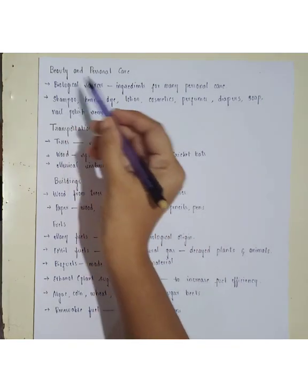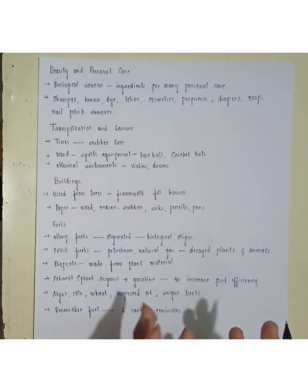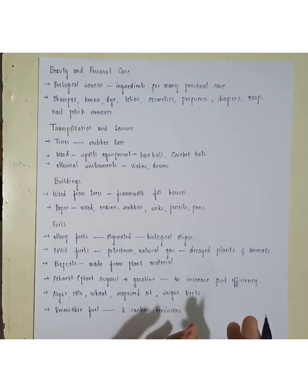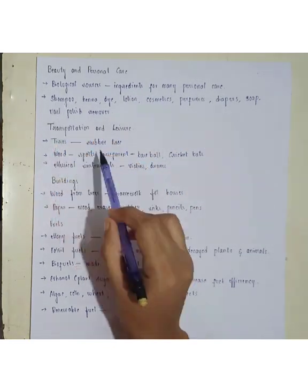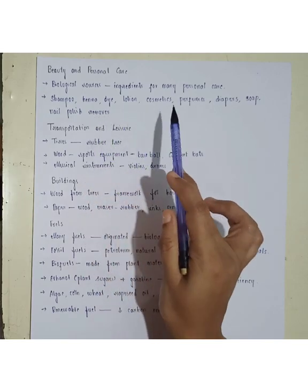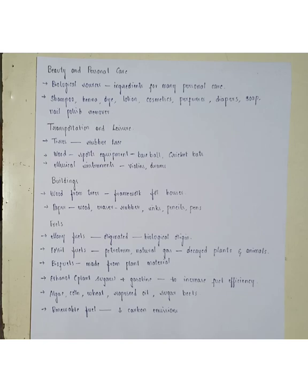Biology is also important in beauty and personal care. Biological sources — meaning living organisms — are used as ingredients for many personal care items. For example, shampoo, henna, dye, lotions, cosmetics, perfumes, diapers, soap, and nail polish remover are all made from biological products.